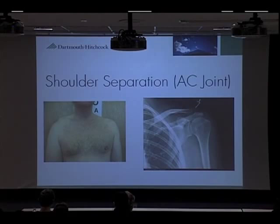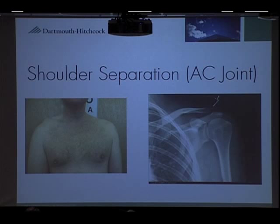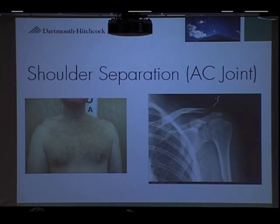Shoulder dislocation happens at the true shoulder joint — the glenohumeral joint. Shoulder separation, on the other hand, happens at the AC joint. This image illustrates the AC joint. So if you hear the term 'shoulder separation,' it's not at the glenohumeral joint — it's at a smaller joint in the shoulder. There are six grades of AC joint separation, and in sports injuries you typically see only about three of those grades.